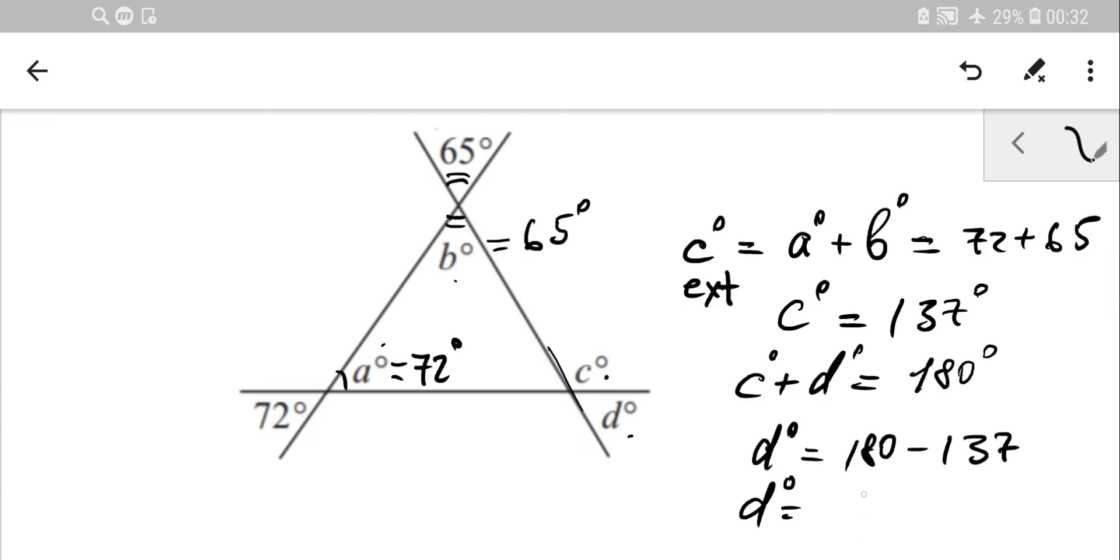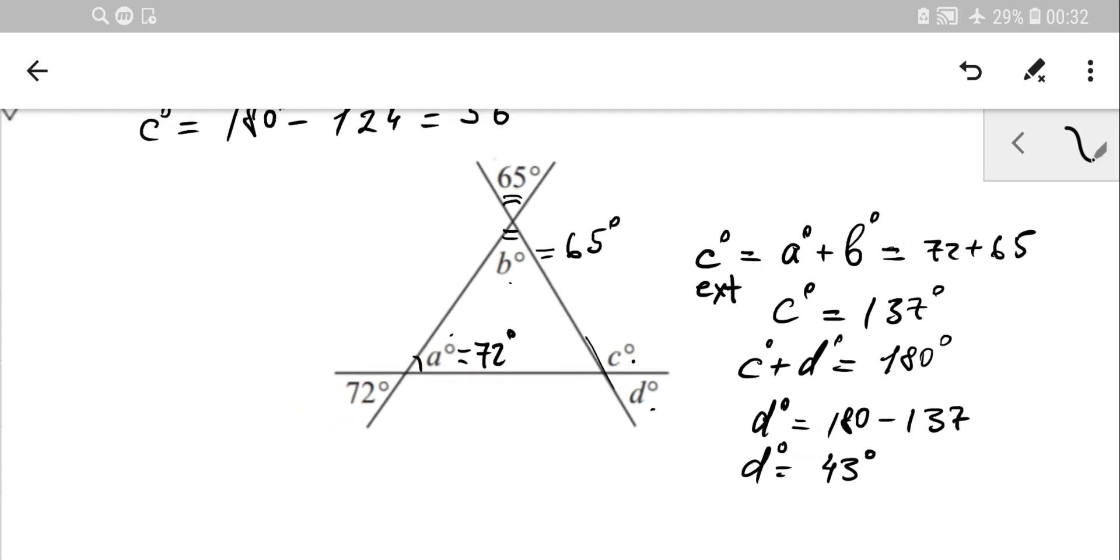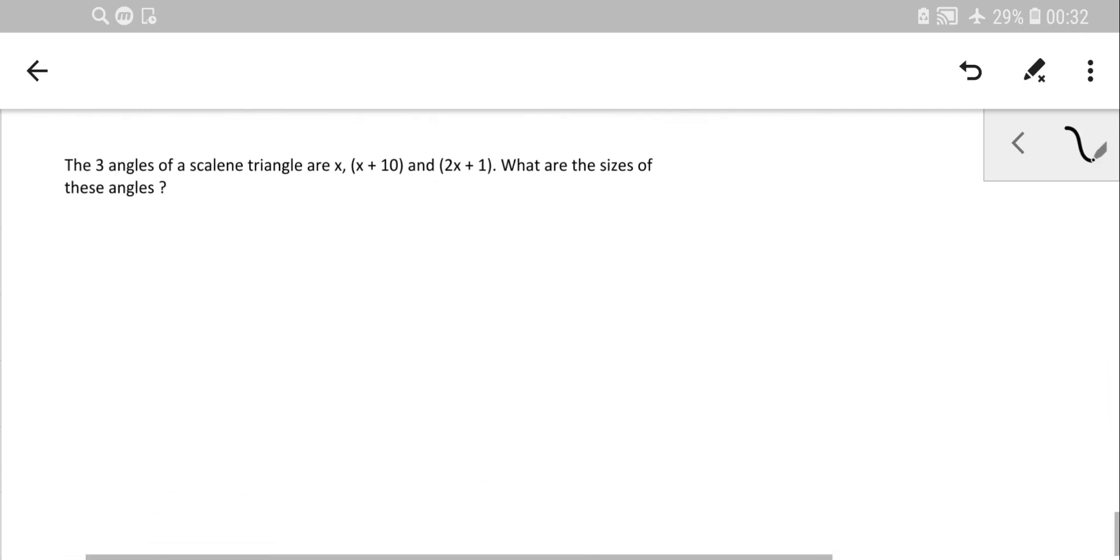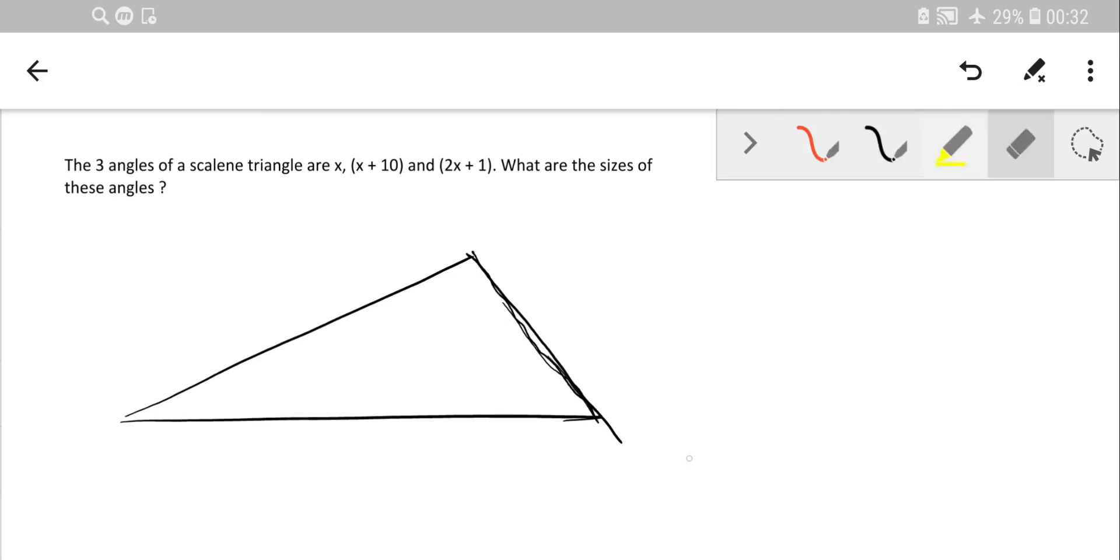Next one. The three angles of a scalene triangle are X, X plus 10, and 2X plus 1. What is the size of these angles? So I'll draw a scalene triangle.